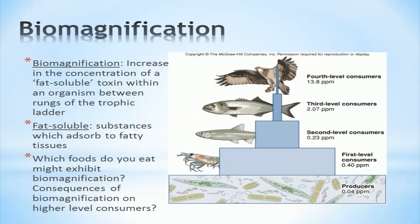Biomagnification is defined as an increase in the concentration of a fat-soluble toxin within an organism between trophic levels. Fat-soluble refers to substances which more easily absorb to fatty tissues. For example, producers like algae take in small amounts of a toxin. First level consumers eat a lot of algae and take in more of the toxic substance. This effect magnifies up the trophic ladder, with apex predators exhibiting the largest toxin concentrations.